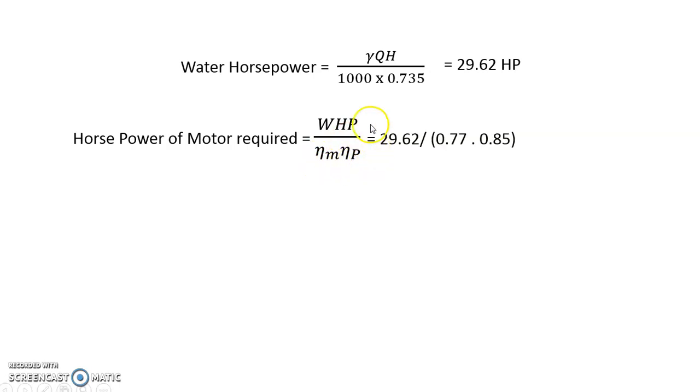So water horsepower calculated is 29.62 divided by 0.77, this is for 77 percent, into 85 percent is written as 0.85 in terms of fractions. So the horsepower of motor required is around 45.26 horsepower, this is the power of motor.